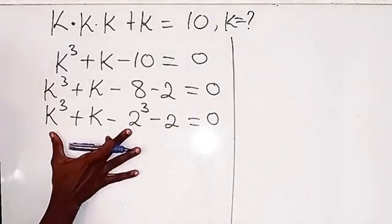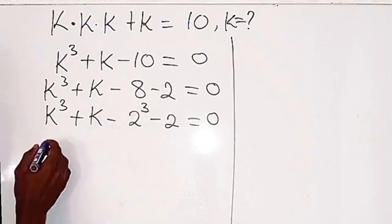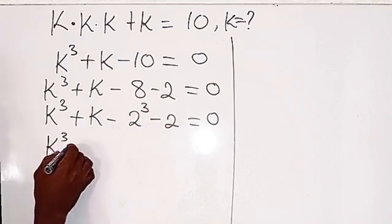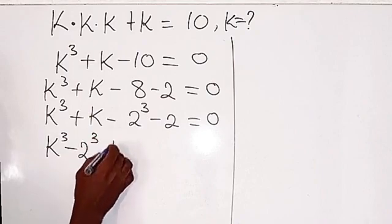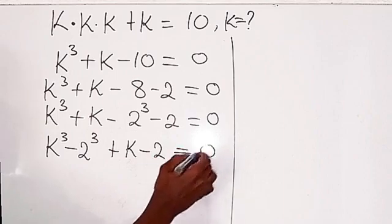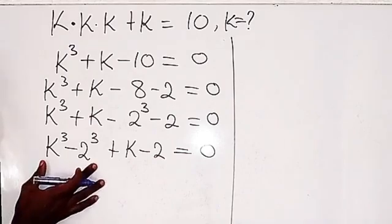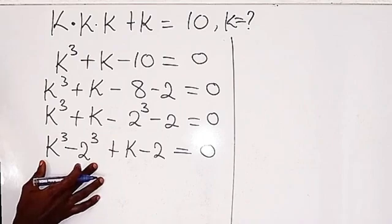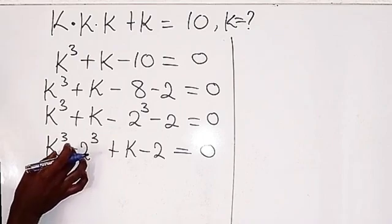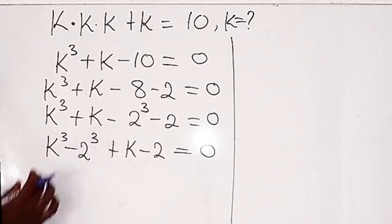Now from here, I will bring these together because they are having the same power. k to the power of 3 minus 2 to the power of 3, then plus k minus 2, equals 0. So now from here, the next thing we are going to do is recognize that we have a cube — that is the difference of 2 cubes.